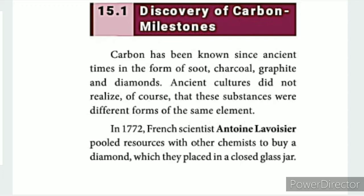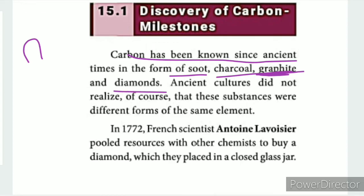This is the story of carbon milestones. Carbon has been present on Earth since ancient times. Carbon appears in various forms such as soot, charcoal, and graphite. Graphite is used in pencils. Another form of carbon is diamond.